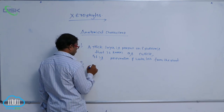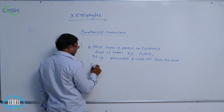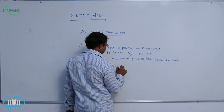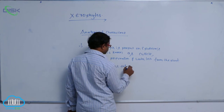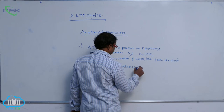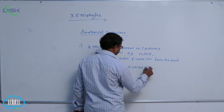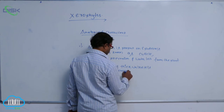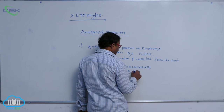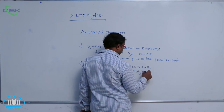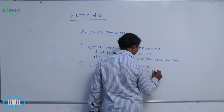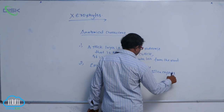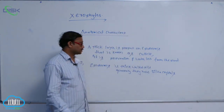Epidermis is thick-walled cells. Generally, they have silica crystals. Due to the presence of silica crystals, leaves surfaces appear roughness.